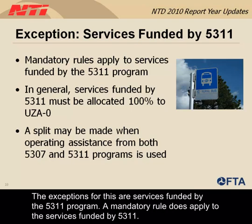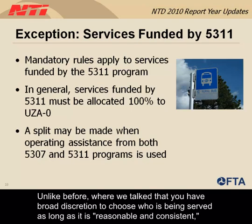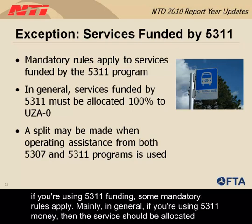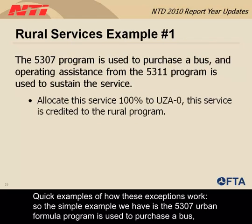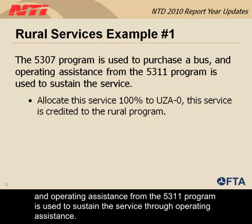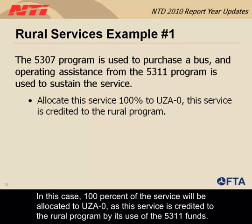If you're using 5311 funding, some mandatory rules apply. In general, service should be allocated 100% to rural UZA-0. The exception is when operating assistance from both 5307 and 5311 is used. For example: if the 5307 urban formula program is used to purchase a bus and 5311 operating assistance sustains the service, 100% of the service is allocated to UZA-0. A more complex case: a commuter service from a rural area into the Timbuktu urbanized area (under 200,000 population) using both 5307 and 5311 operating assistance.